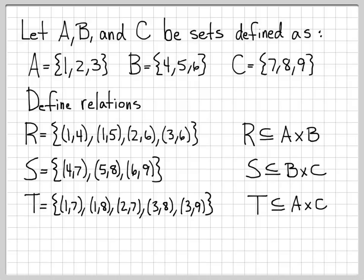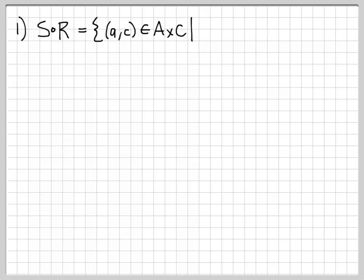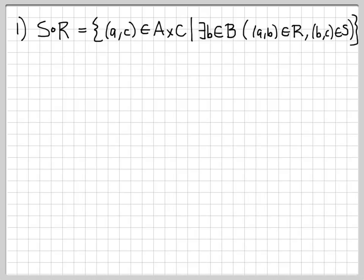These are the sets and relations we're going to work with, and now we're going to do a few simple computations. The first thing we're going to compute is S composed of R. S∘R is itself a set, and it consists of pairs (a, c) from A×C, but only given that there exists a b in set B such that (a,b) is in R and (b,c) is in S. As we work through this concrete example, you'll see how this definition actually works.